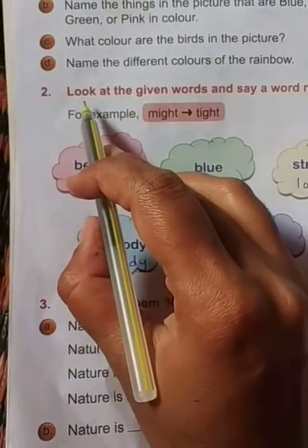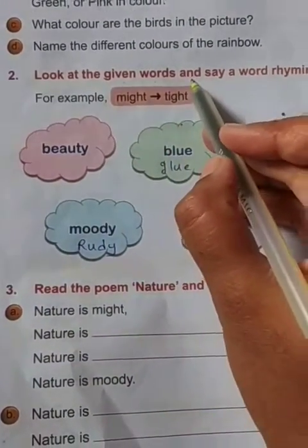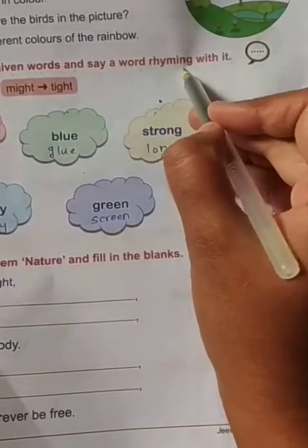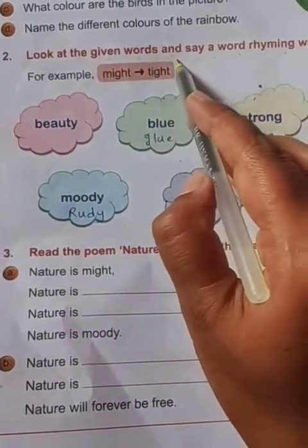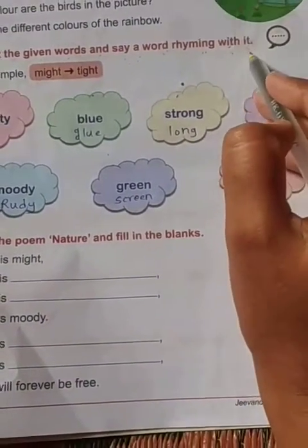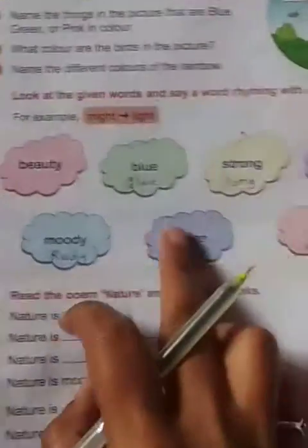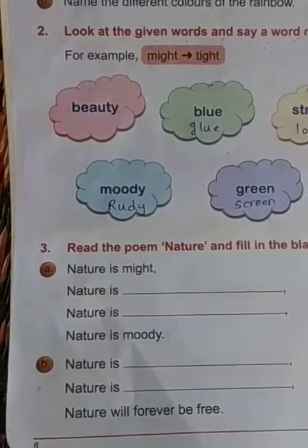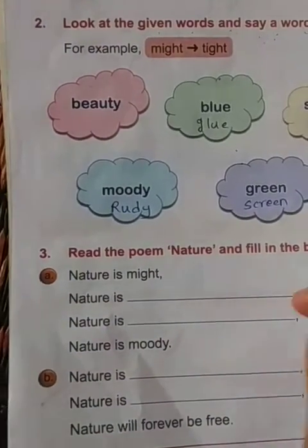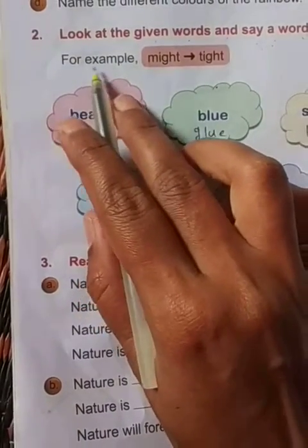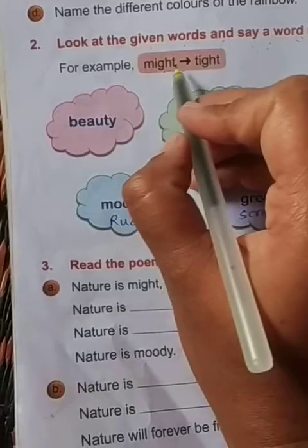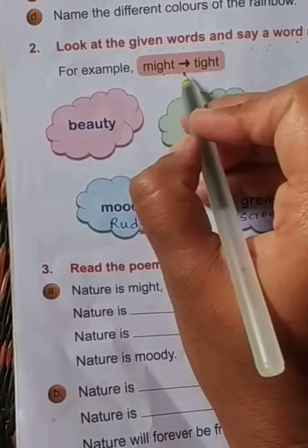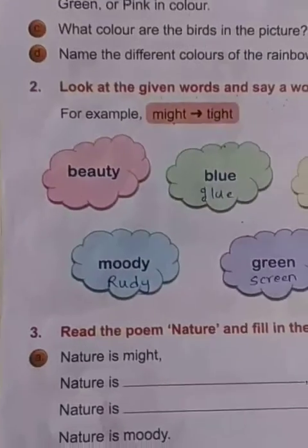Now question number two: Look at the given words and say a word rhyming with it. First, read the word, then find a rhyming word. For example, M-I-G-H-T — might. The rhyming word is tight. Both words have the same pronunciation: might, tight.